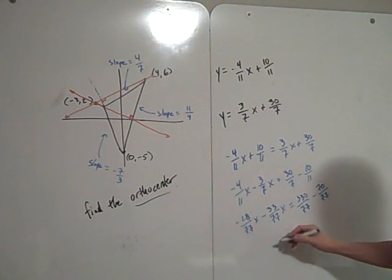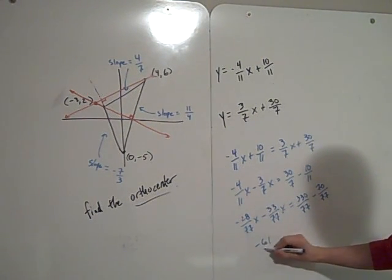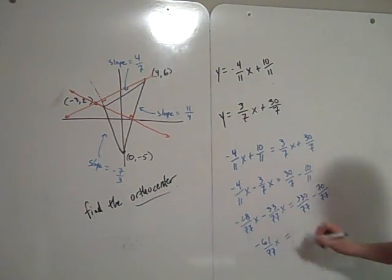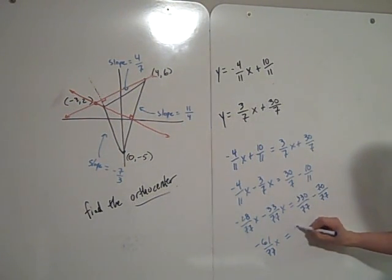We have negative 28 over 77x minus 33 over 77x equals 330 over 77 minus 70 over 77. So negative 28 minus 33, this is minus 61 over 77x. This is equal to 260 over 77.